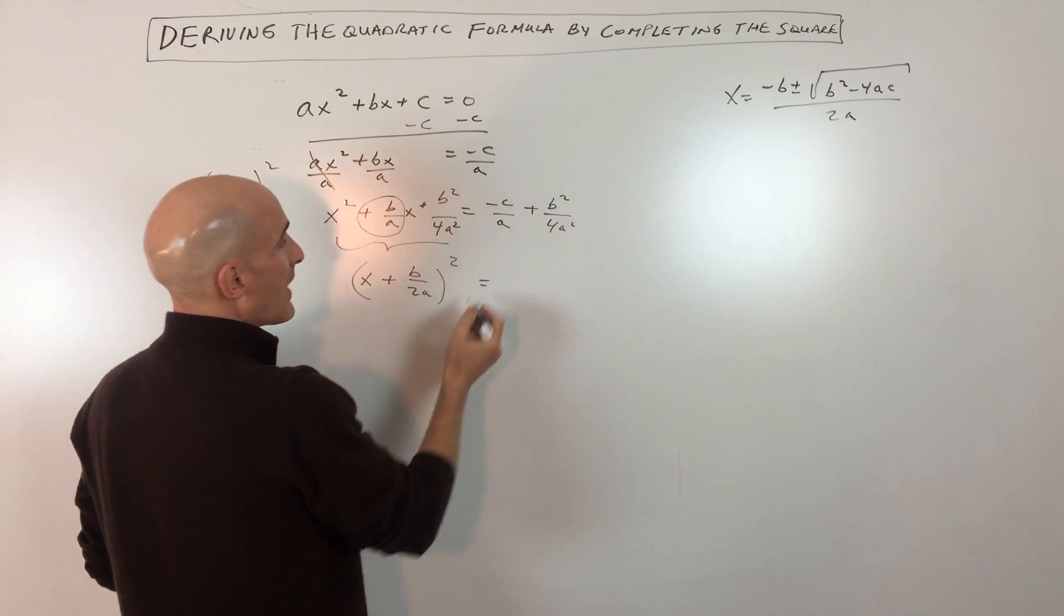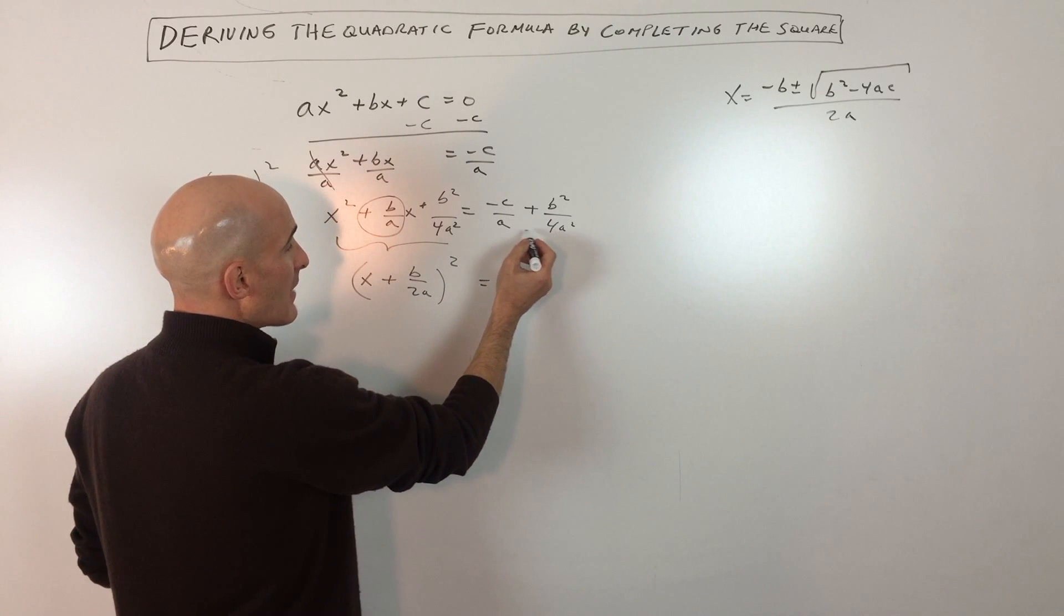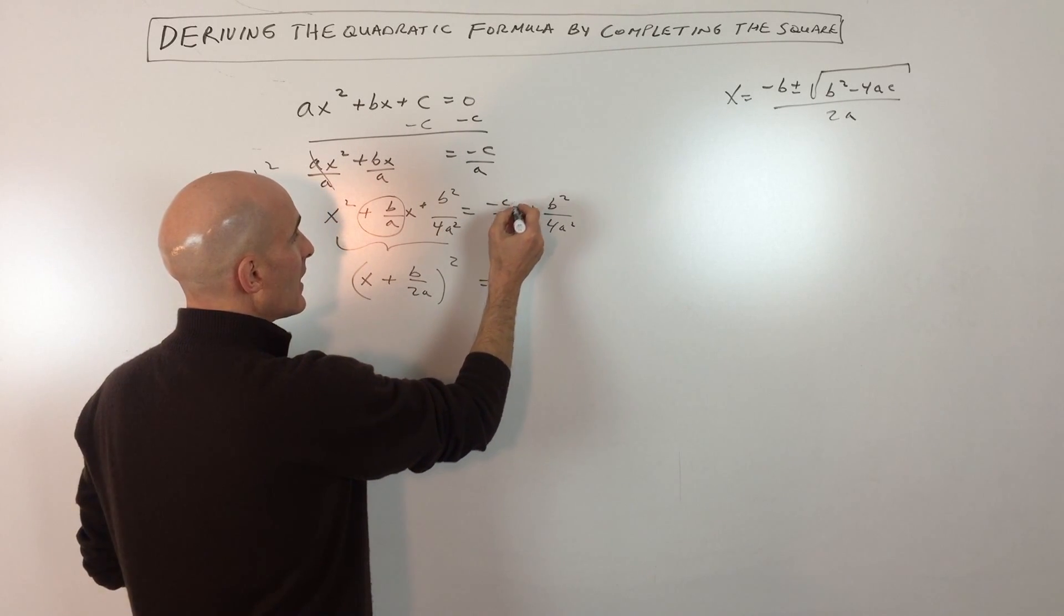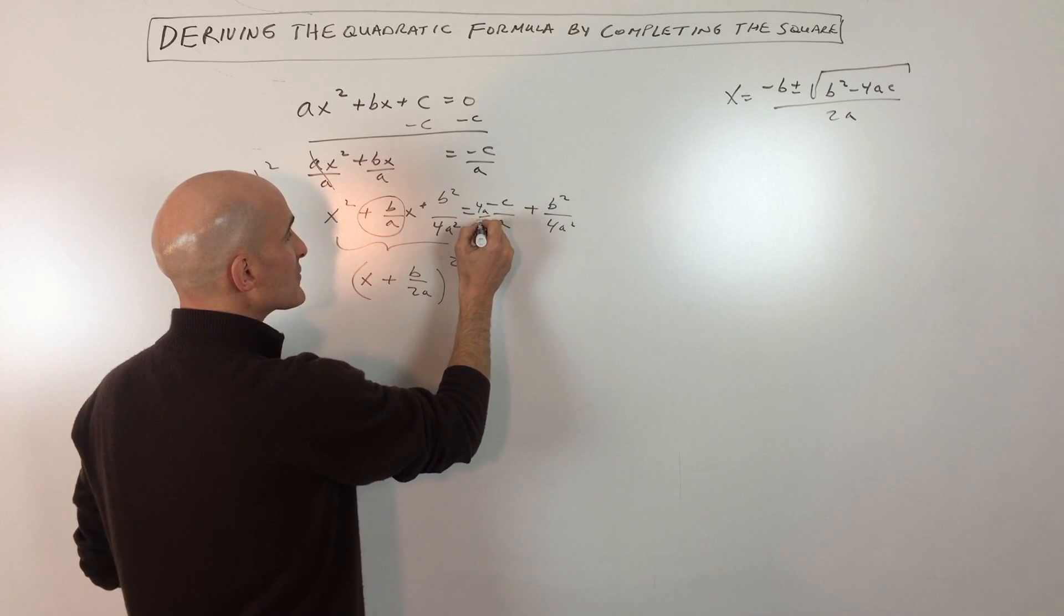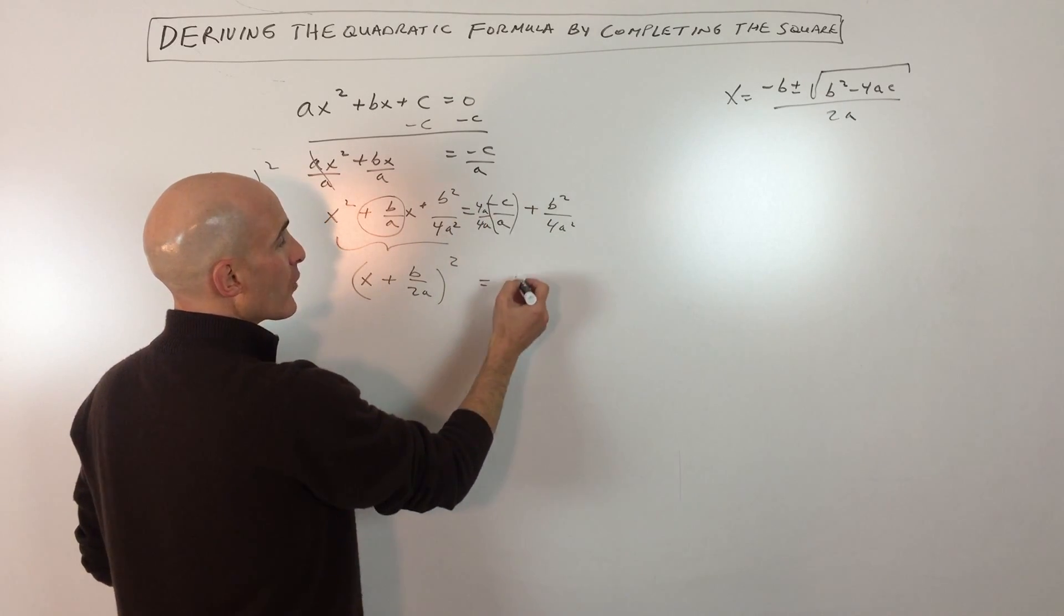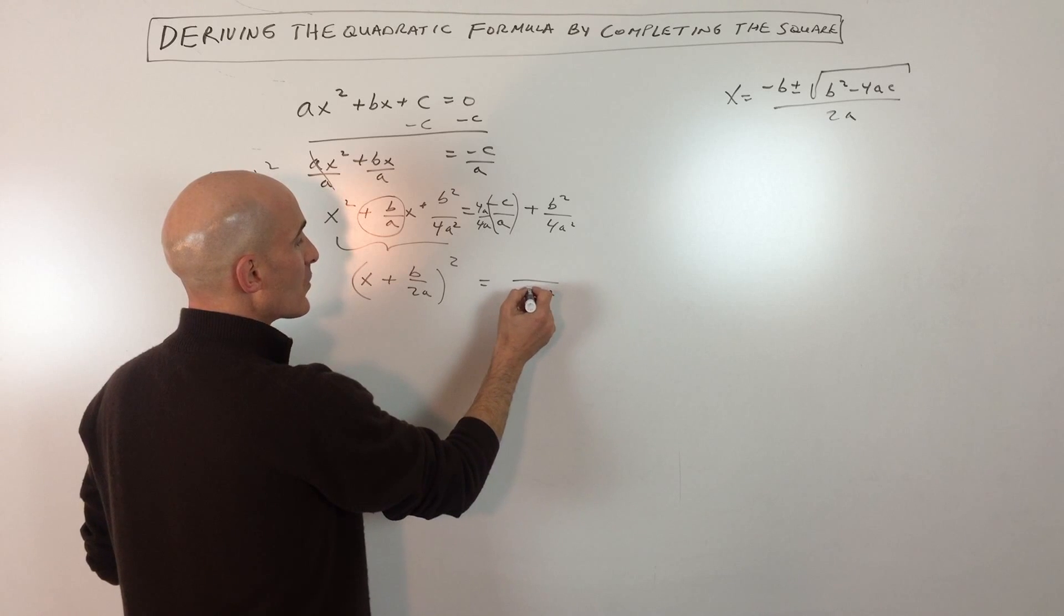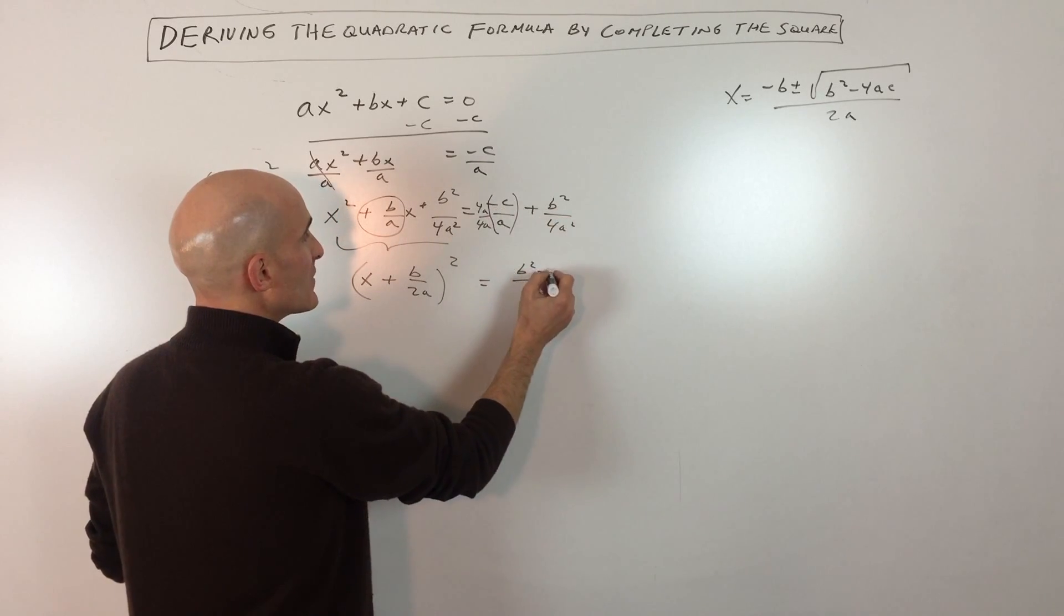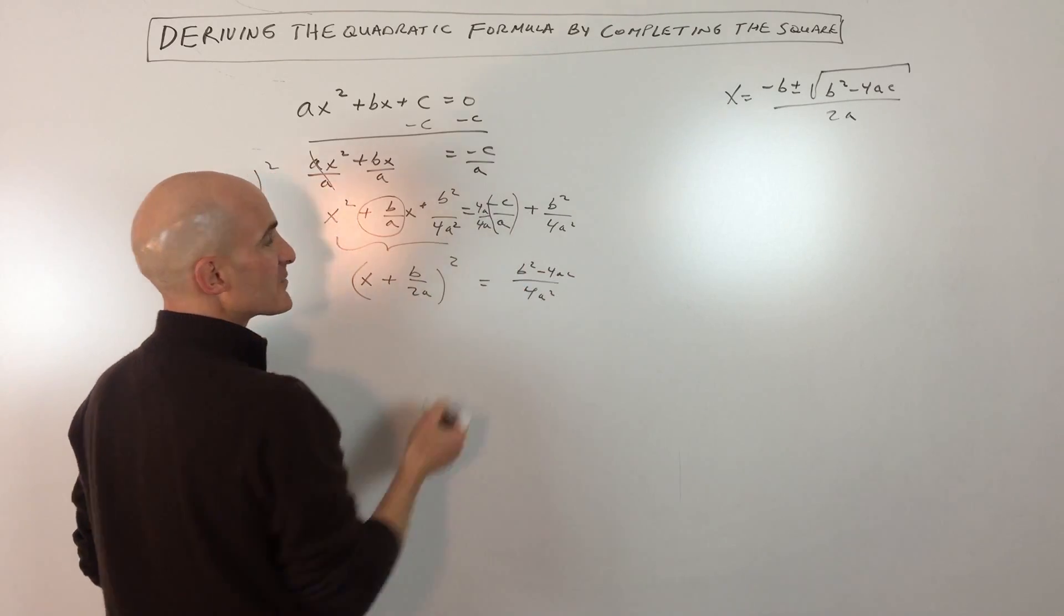now over here to combine these, we're going to have to get common denominators. So I'm going to have to multiply the numerator and the denominator of this fraction by 4a, so we get the common denominator of 4a squared. So that's going to give us 4a squared. This is going to be b squared for this fraction, and this is going to be negative 4ac for this fraction.